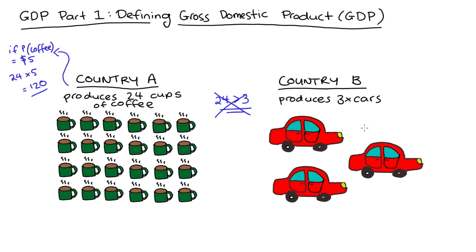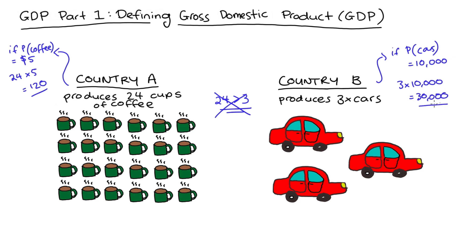In our example, let's say the price of a cup of coffee was $5. If country A was only producing 24 cups of coffee and nothing else, their GDP would be 24 times 5, so $120. For country B, if they were only producing three cars and nothing else, and the price of each car was $10,000, then their GDP would be 3 times $10,000, so $30,000. Including the market price gives us a better reflection of the value of production. Under this measure, country B's production is greater than country A's — $30,000 is greater than $120.